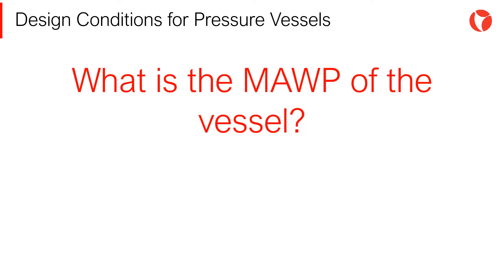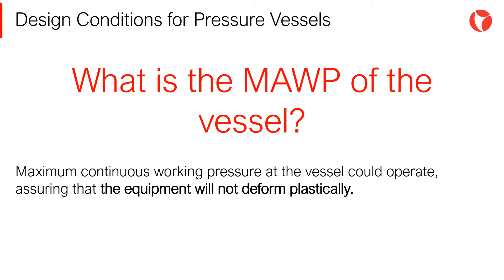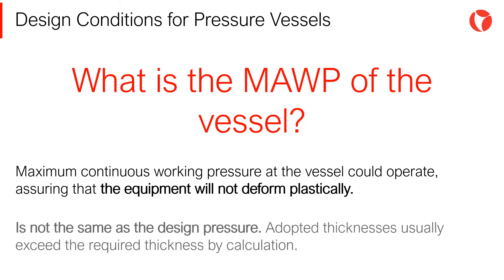The MAWP, or maximum allowable working pressure, is the maximum continuous working pressure at which the vessel could operate, assuring that the equipment will not deform plastically. The MAWP is not the same as the design pressure. Adopted thicknesses usually exceed the required thickness by calculation, and this excess is what generates the pressure jump up to the MAWP.